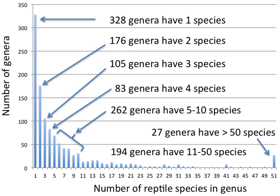Each genus should have a designated type, although in practice there is a backlog of older names without one. In zoology, this is the type species, and the generic name is permanently associated with the type specimen of its type species. Should the specimen turn out to be assignable to another genus, the generic name linked to it becomes a junior synonym and the remaining taxa in the former genus need to be reassessed.